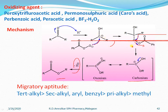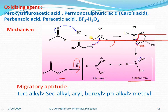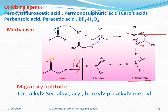The peroxide intermediate then undergoes loss of a carboxylate anion along with migration of the alkyl group onto the electron-deficient oxygen atom, forming a protonated ester — involving oxonium and carbonium ions. The final step is loss of a proton to give the ester as the final product.